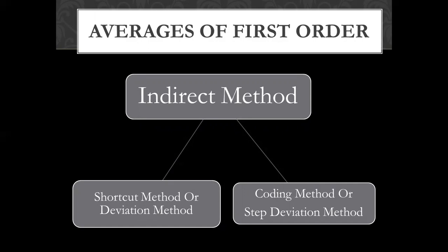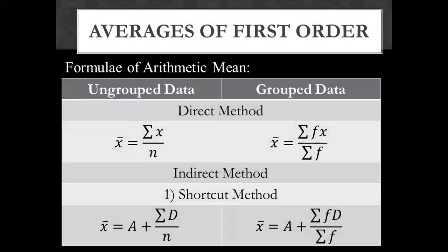Next we will discuss the formulas for ungrouped and grouped data. For ungrouped data, the direct method formula is: x-bar equals summation of x over n. For grouped data, the formula is: x-bar equals summation of fx over summation of f.